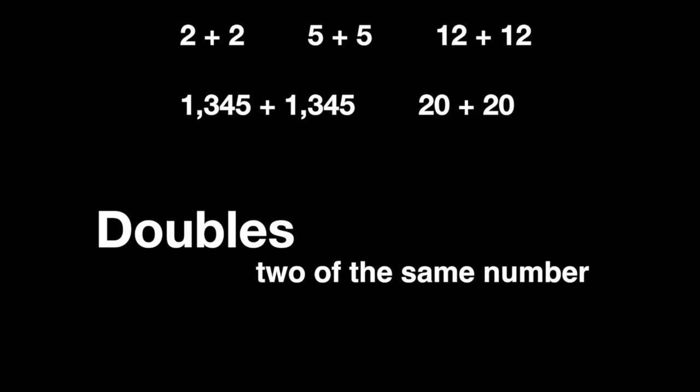To double is to put together two like groups, or add two of the same number. Like two plus two, five plus five, or 1,345 plus 1,345.